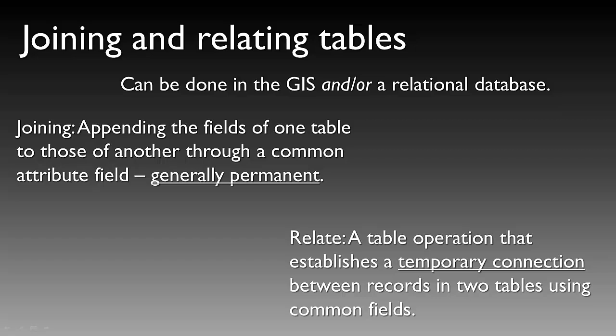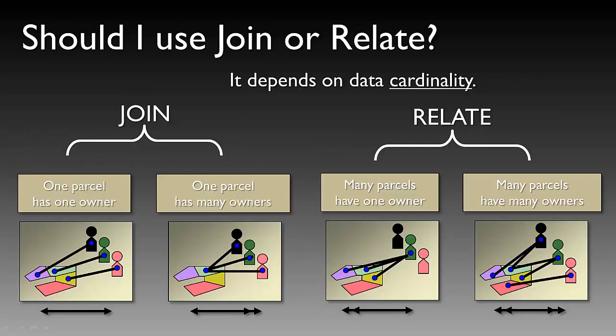What's similar between these two actions is that we're using common fields, or some sort of unique identifier, that allows us to join or relate the tables together. When you're working with GIS, it's often a question whether you should use a join or a relate, and it really depends on the data cardinality.